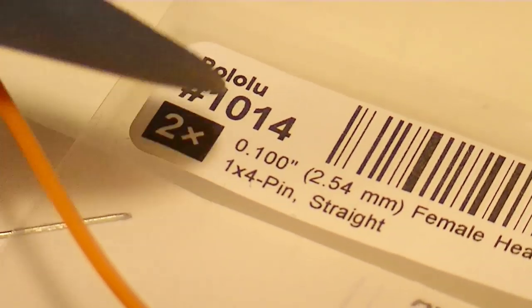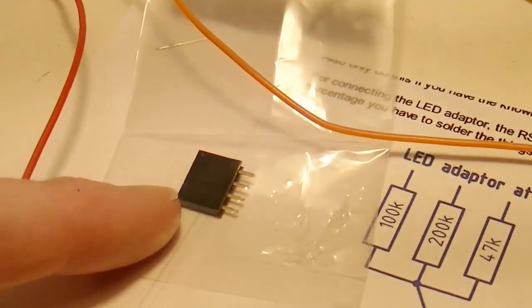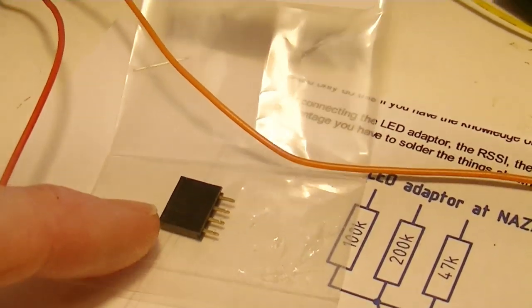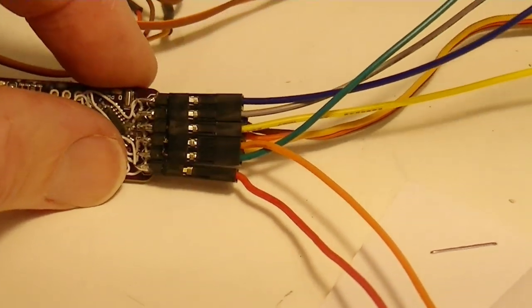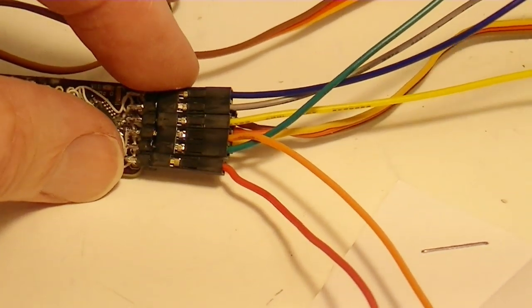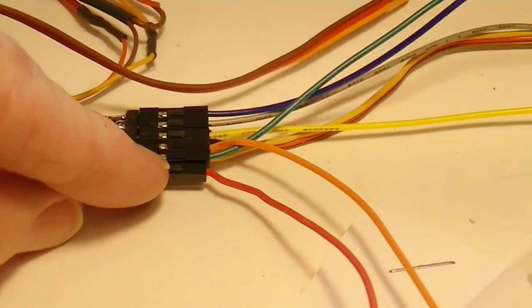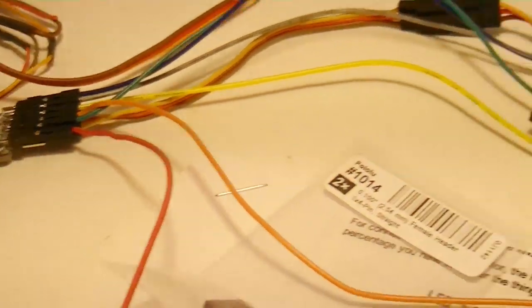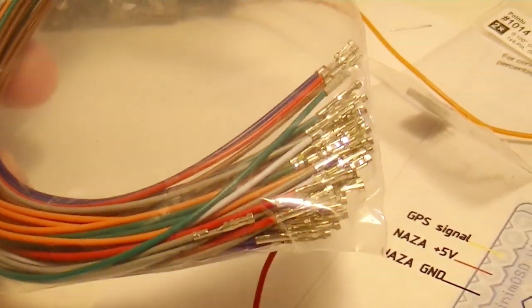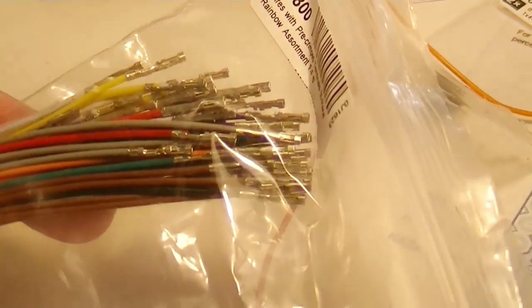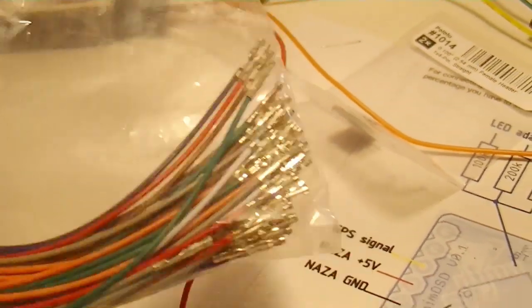From Pololu I have a little connector right here that I ordered as well as some of the other connectors. I have some one pin connectors, two pin, three pin, four pin, all the way up to like six pin. Also Pololu sells these wires here which you can poke into those little connector blocks and make up your own cables. So that's what I've been doing.